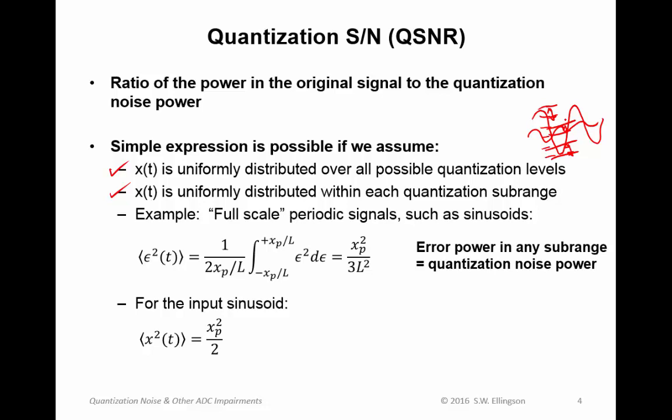We assume that the input is uniformly distributed within each quantization sub-range. So in other words, we spend about the same amount of time here as we do in this sub-range as we do in this sub-range. So the signal statistics in each sub-range are the same. So an example that we can use to develop an expression is full-scale periodic signals, such as sinusoids.